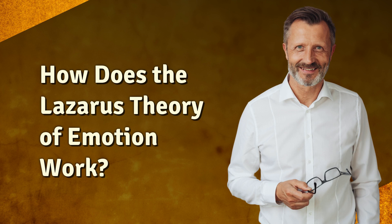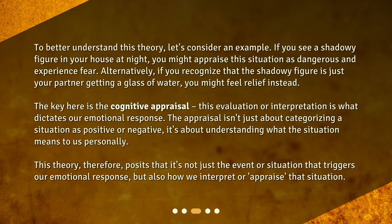To better understand this theory, let's consider an example. If you see a shadowy figure in your house at night, you might appraise this situation as dangerous and experience fear. Alternatively, if you recognize that the shadowy figure is just your partner getting a glass of water, you might feel relief instead. The key here is the cognitive appraisal — this evaluation or interpretation is what dictates our emotional response. The appraisal isn't just about categorizing a situation as positive or negative; it's about understanding what the situation means to us personally. It's not just the event that triggers our emotional response, but also how we appraise that situation.